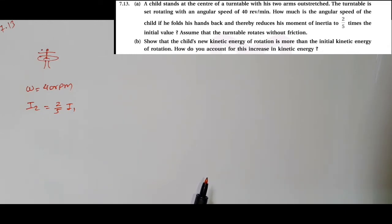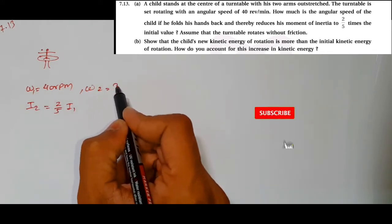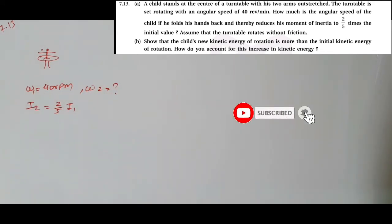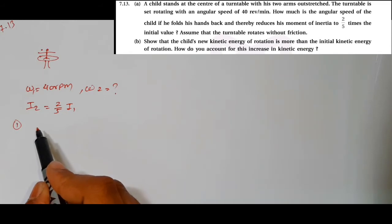We need to show that the child's new kinetic energy of rotation is more than the initial kinetic energy of rotation. How do you account for this increase in kinetic energy? We have to compare the kinetic energies. We'll find omega-1 and omega-2. We can apply the principle of conservation of angular momentum.